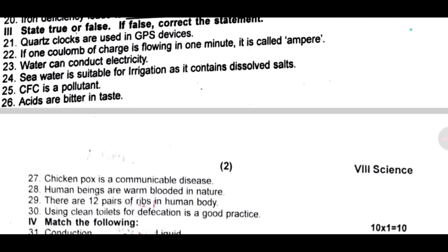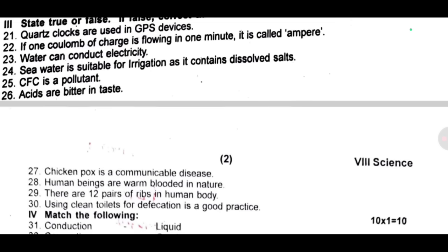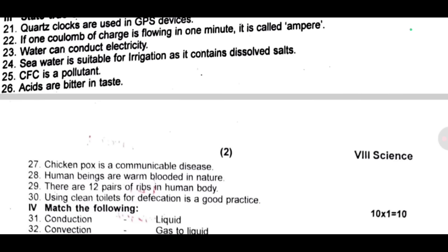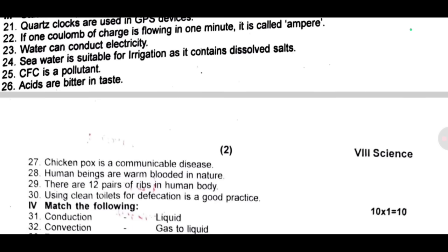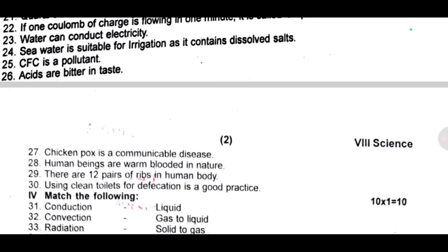Twenty-seven: chicken pox is a communicable disease. Twenty-eight: human beings are warm-blooded in nature. Twenty-nine: there are twelve pairs of ribs in the human body. Thirty: using clean toilets for defecation is a good practice.